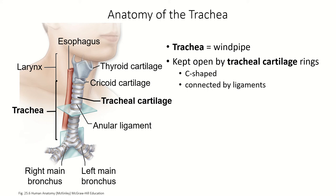For this next section, we're going to talk about the anatomy of the trachea itself. Your trachea is your windpipe — the structure that stays open so that air can always easily pass from the external environment into the lungs.